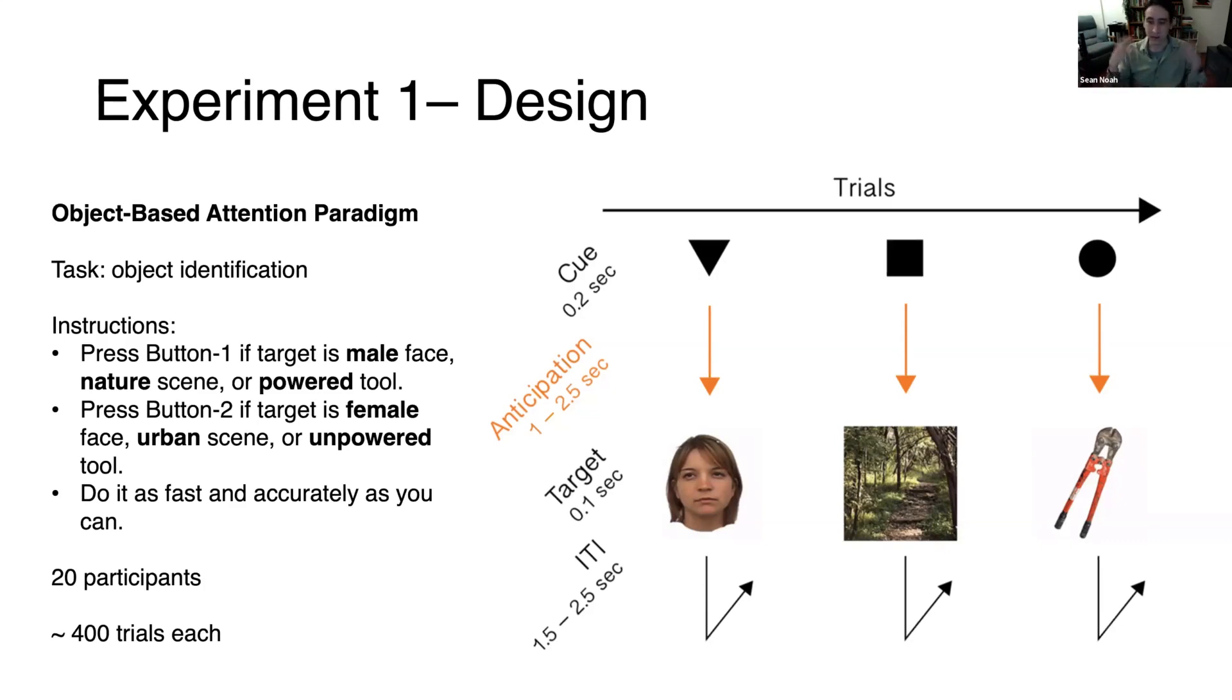The cue that they saw before the target presentation alerted them to the category of image for the discrimination task. We were hoping that by cueing our participants to the object category, they'd be able to perform that discrimination faster and more accurately than if they were cued to a different object category and then we switched the target that was presented. This is analogous to the invalid/valid trial design in a Posner cueing task where maybe you're cued to the left but then the target appears on the right 20% of the time. This is a way to operationalize attention behaviorally. We were particularly interested in this anticipatory period between the cue and the target and what was going on in the EEG here.